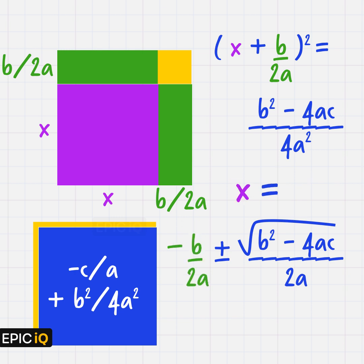By moving b/2a to the other side, we get the all familiar quadratic formula, which is x = (-b ± √(b² - 4ac))/2a.